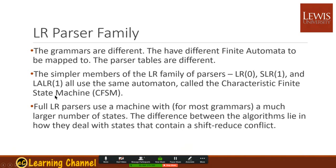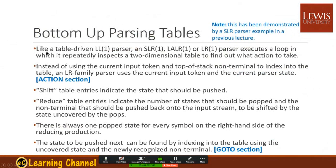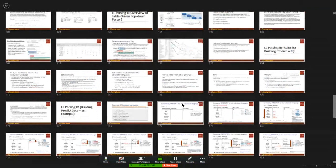For bottom-up parsing tables, like the table-driven LL1 parser, SLR1, LALR1, and LR1 parsers use a loop that repeatedly inspects a two-dimensional table to find out what action to take. The parser driver is based on this algorithm. The tables are different, but the basic algorithms are similar. Instead of using current input token and type of state non-terminal, LR family parsers use the current input token and current parser state. Shift table entry indicates the state that should be pushed. Reduce means what should be popped, constructing a new node and combining subtrees.